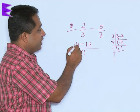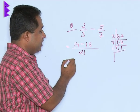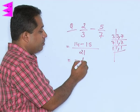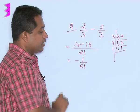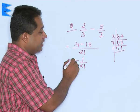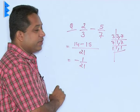So, we have numerator 14 minus 15. Now, 14 minus 15 is equal to minus 1 and denominator will become 21. So, we get the answer as minus 1 by 21.